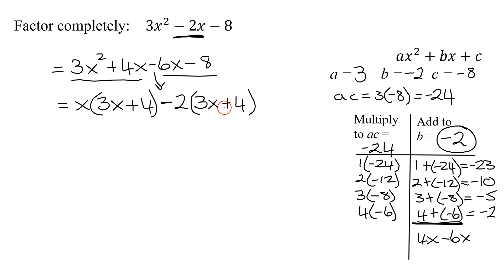So double check, -2 times 3x is -6x. -2 times 4 is -8. It worked. Now,